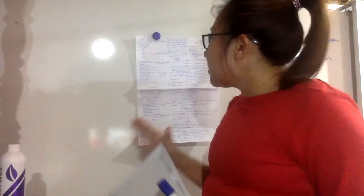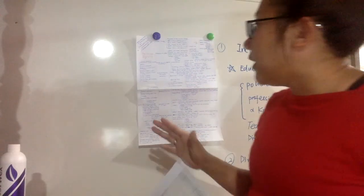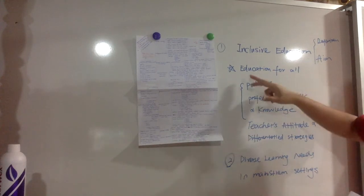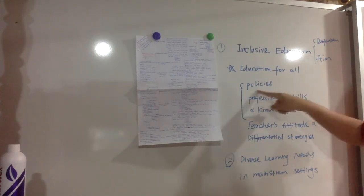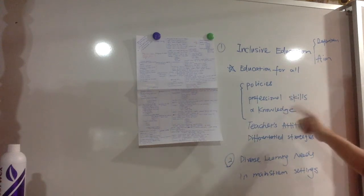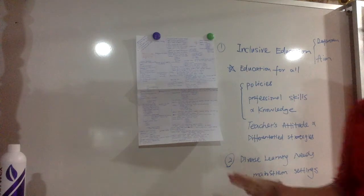We put learners first, curriculum second. We need to focus on different students' needs. This education for all can be achieved through policies, professional skills and knowledge of teachers, teacher attitudes, and their strategies.